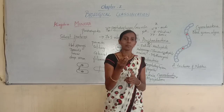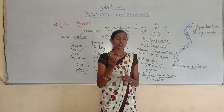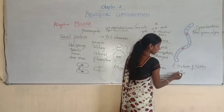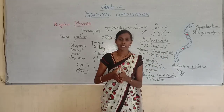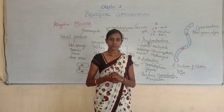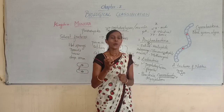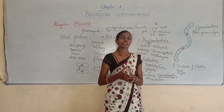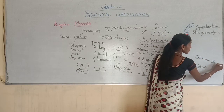Cyanobacteria are usually unicellular, colonial, or filamentous, and are photosynthetic autotrophs — dependent on sunlight to prepare their own food using chlorophyll A. The colonies or filaments are usually surrounded by a gelatinous sheet. This is very important in cyanobacteria.